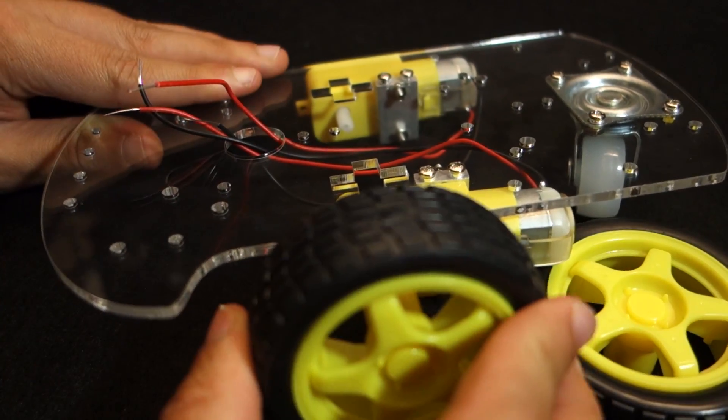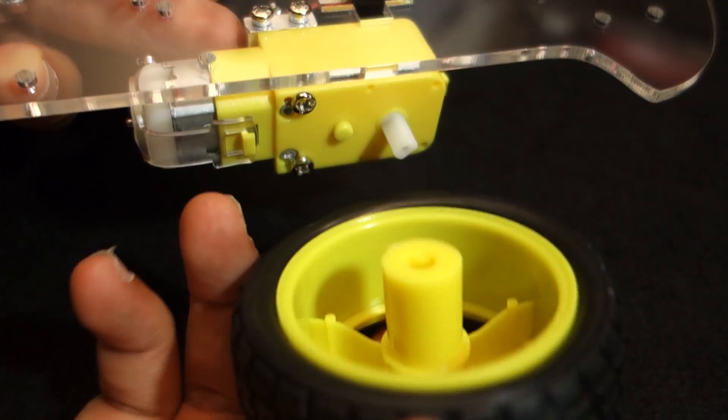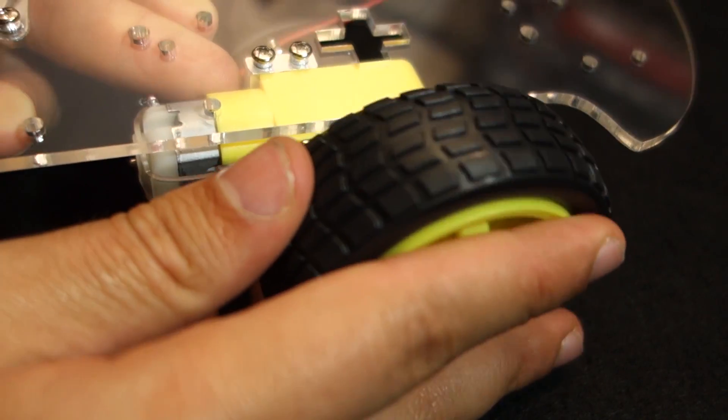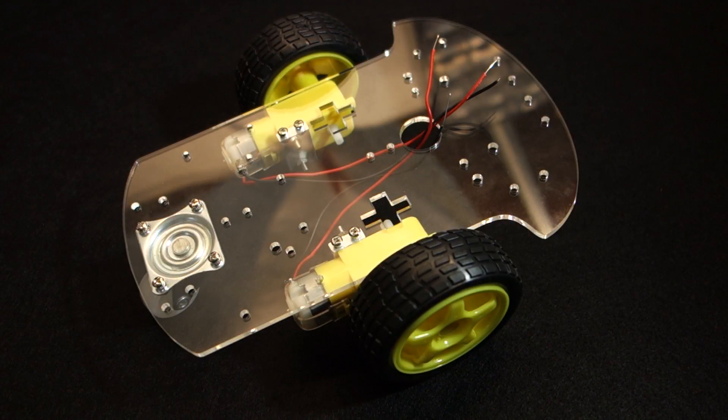Lastly, you can connect the wheels to the DC motor. Now, your robot car chassis is ready to be connected to a microcontroller. There we go.